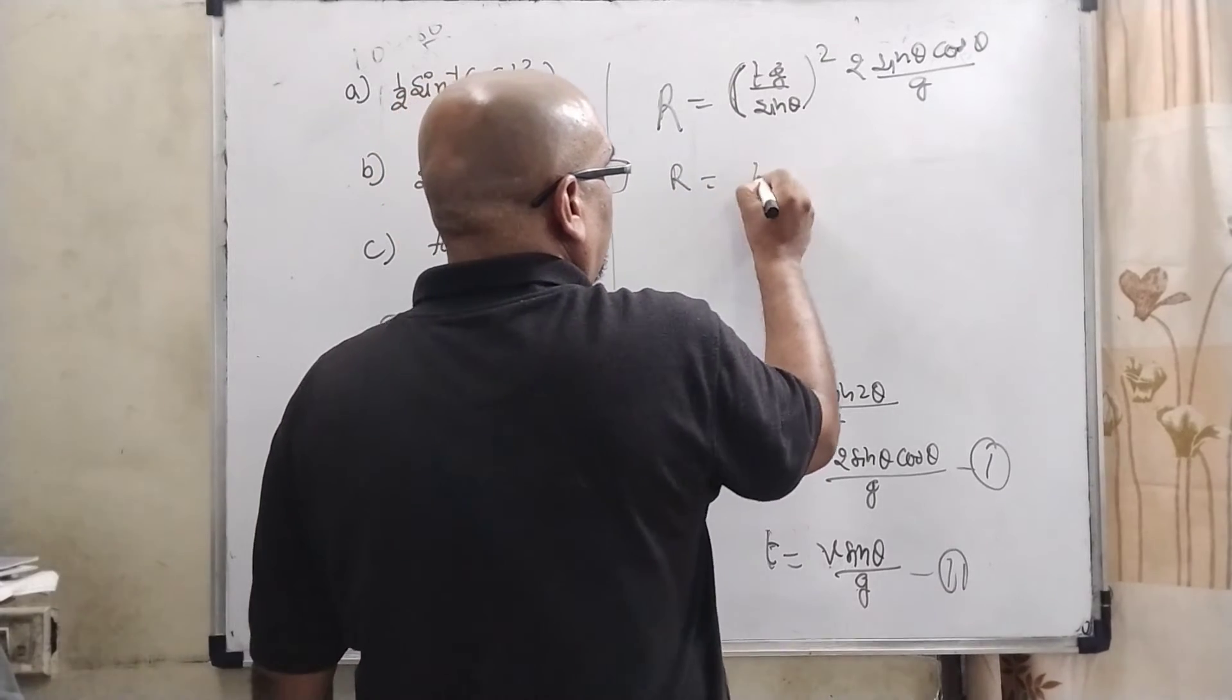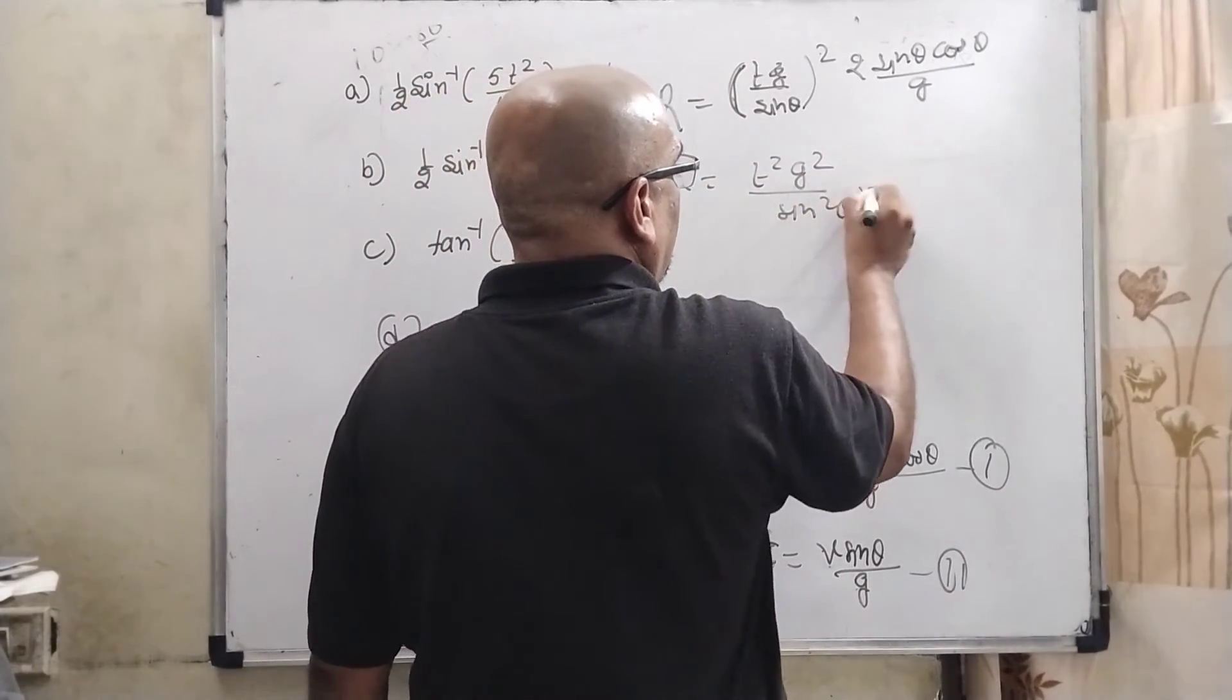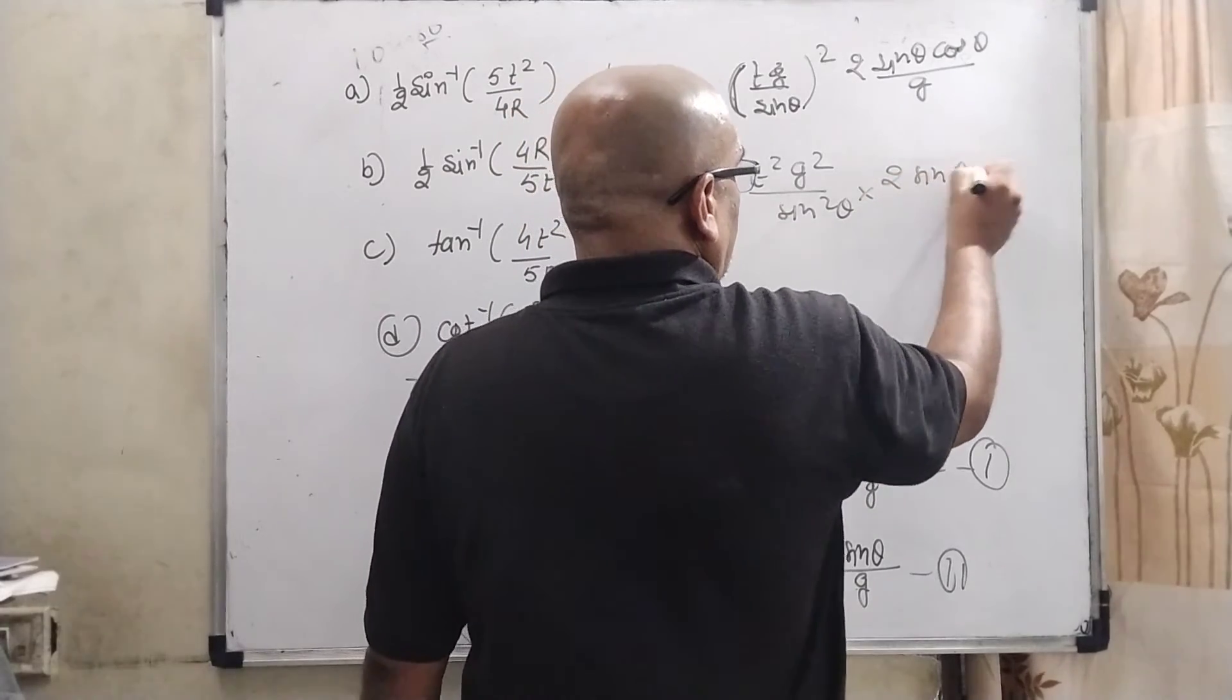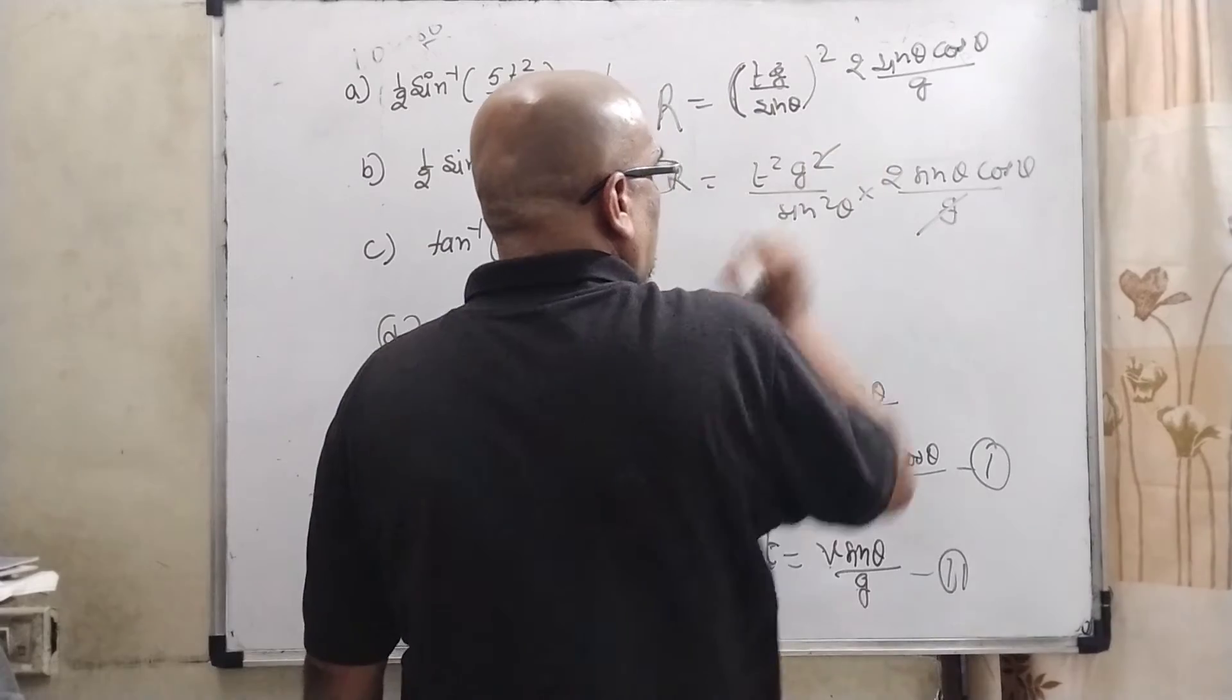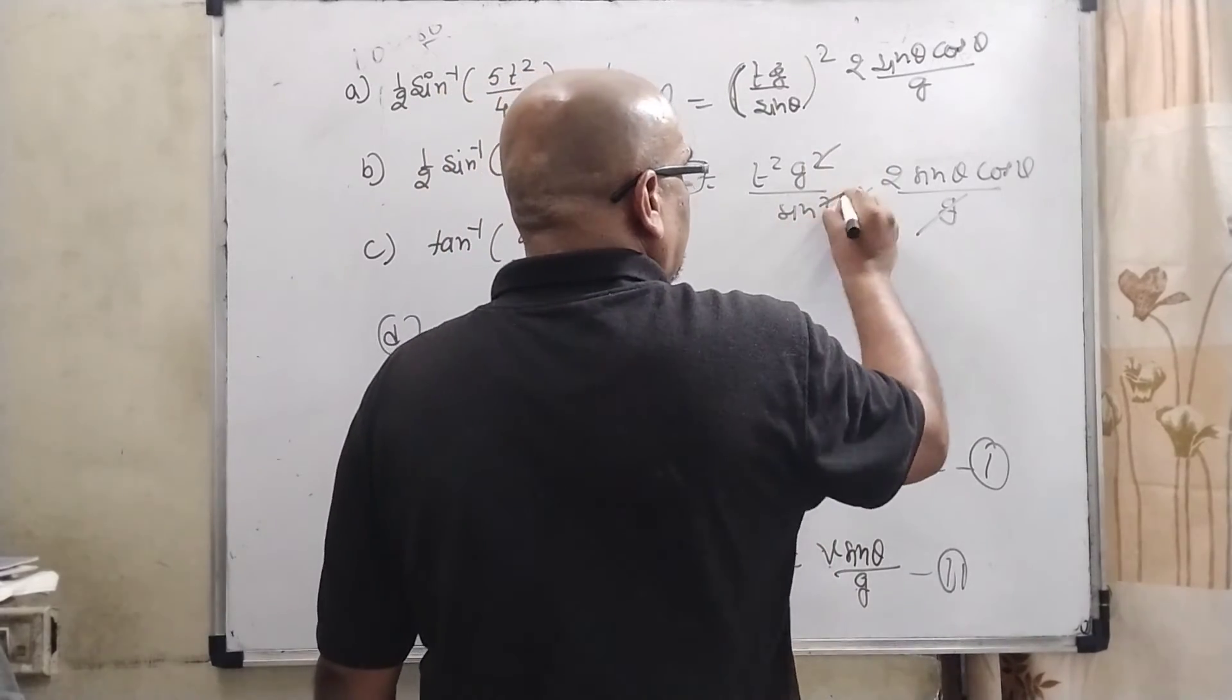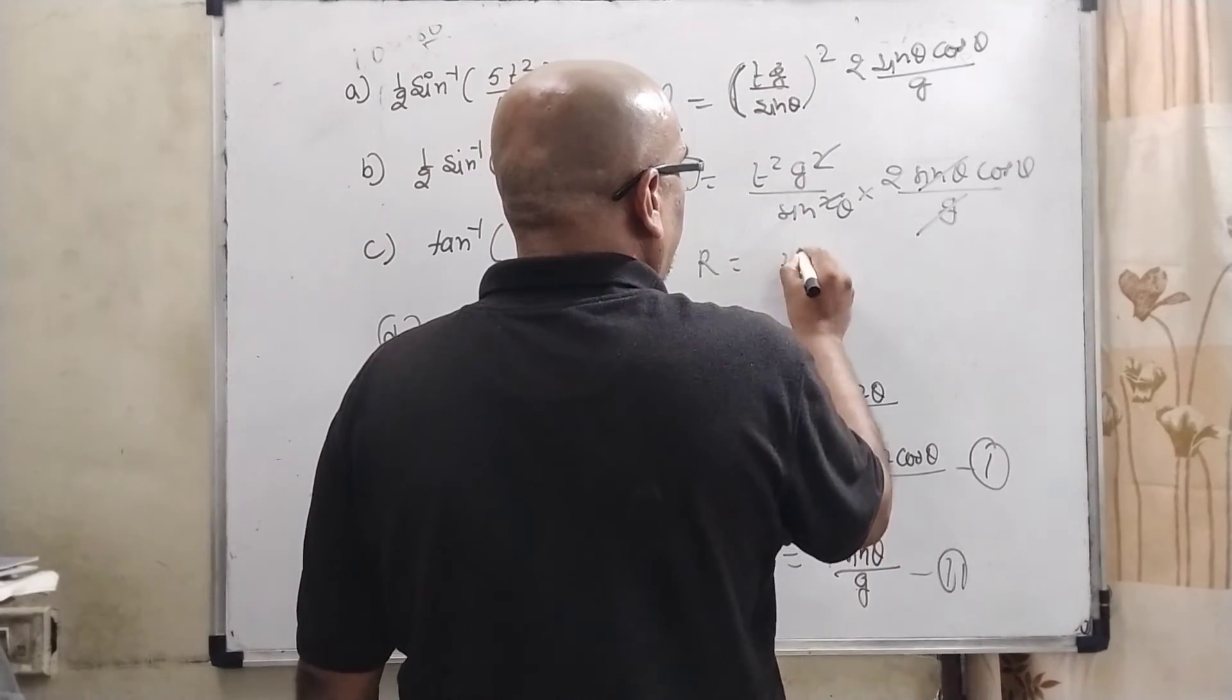Then we substitute this value of v = tg / sin θ in place of v, and that is squared, 2 sin θ cos θ / g. Then R = t²g² / sin²θ × 2 sin θ cos θ / g. One g cancels out. Here one sin θ is also cancelled out.